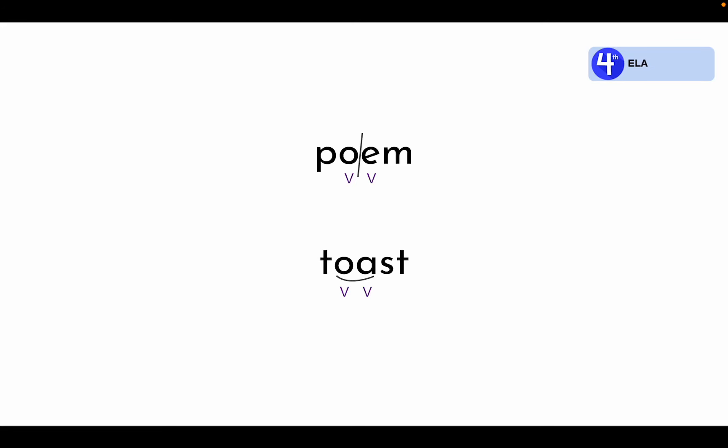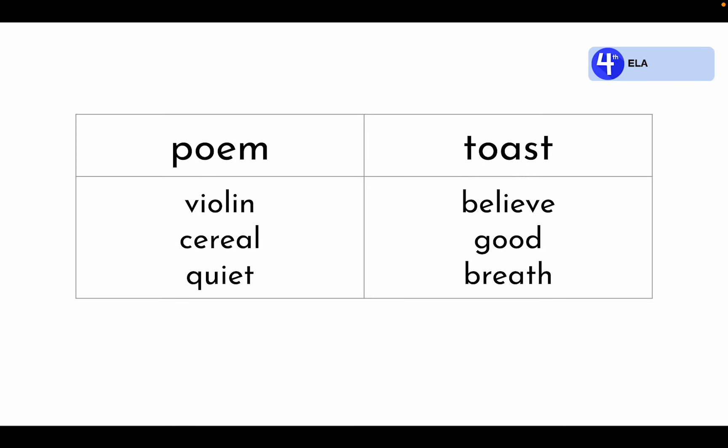Let's look at some more words with vowel-vowel spelling patterns. Here we have our words broken into two columns. At the top of the left-hand column is the word poem, and at the top of the right-hand column is the word toast. Let's begin by reading the words underneath poem: violin, cereal, quiet. They all have a vowel-vowel pattern. In violin, the vowels i and o are next to one another. In cereal, the vowels are e and a. In quiet, the vowels are i and e. In each of these words, the vowels next to each other are not working together to make one sound. Rather, they are dividing into syllables in between those two vowels.